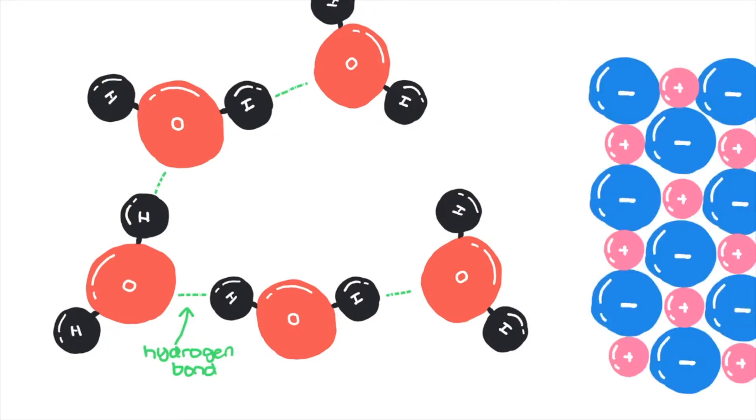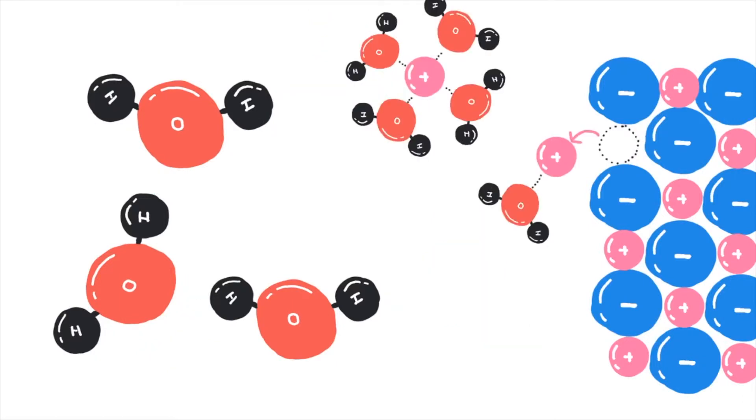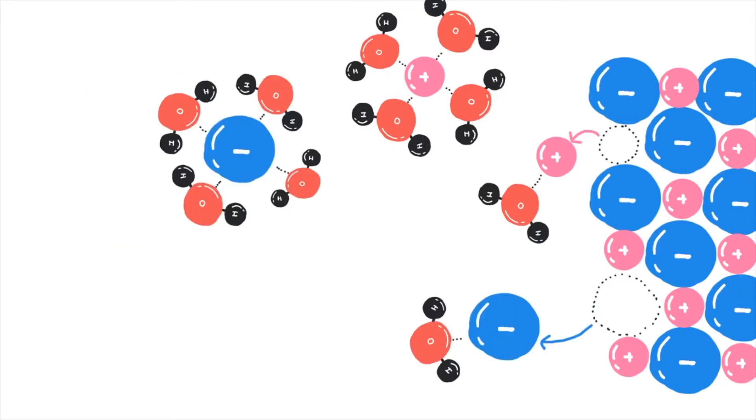When an ionic lattice such as sodium chloride is in proximity, the sodium cation is attracted to the negative oxygen part of the water molecule, and the chloride anion is attracted to the positive part of the water molecule.